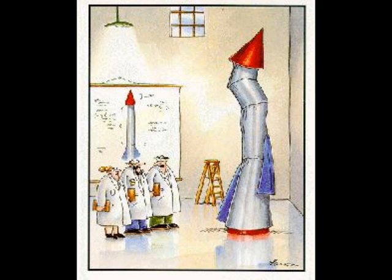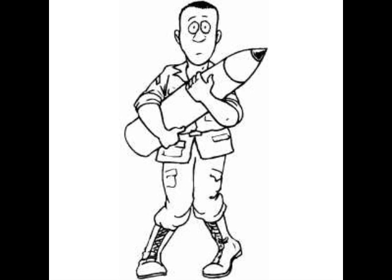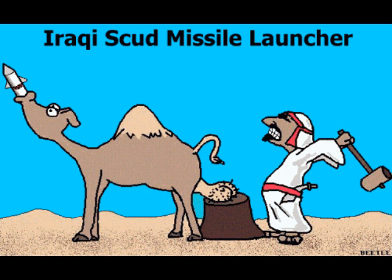The guidance subsystem uses deviations to generate corrective commands to drive the missile from a position where it is to a position where it isn't, and arriving at a position where it wasn't, it now is.